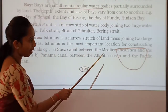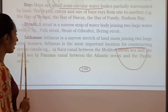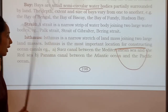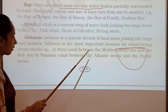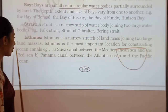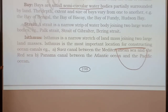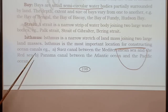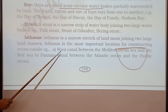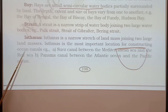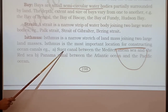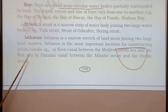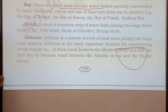An isthmus is a narrow stretch of land mass joining land masses. The isthmus is the most important location for construction of an ocean canal — where we can store and supply water. Examples of canals at an isthmus: the Suez Canal between the Mediterranean Sea and the Red Sea, and the Panama Canal between the Atlantic Ocean and the Pacific Ocean.